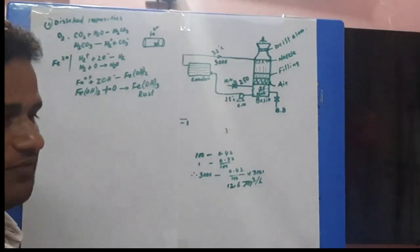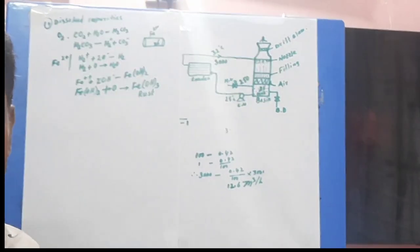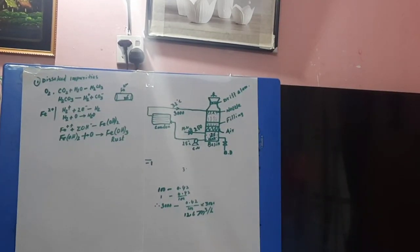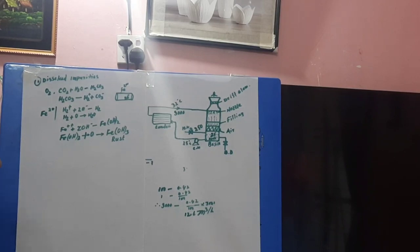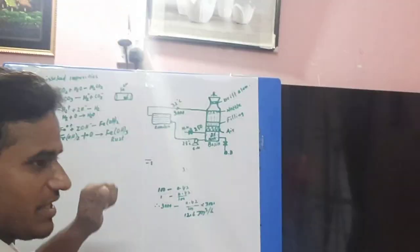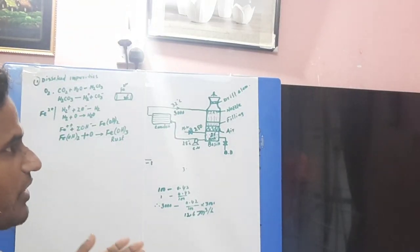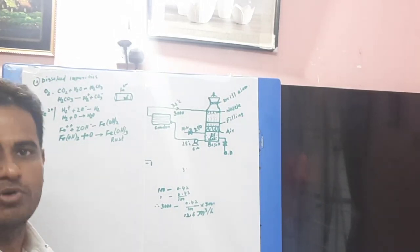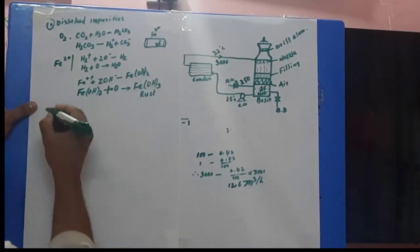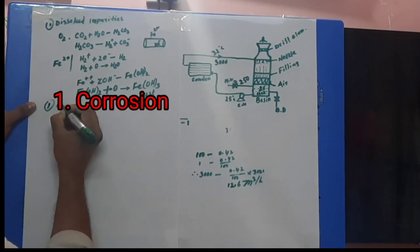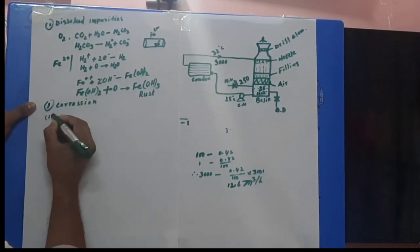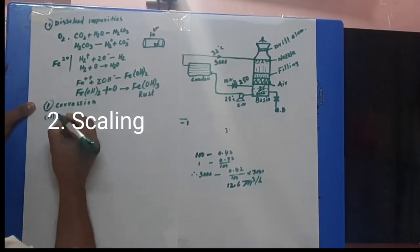If dissolved impurities are present in the water — such as calcium sulfate, magnesium sulfate, and magnesium carbonate (these are salts) — they will go to the condenser tube and deposit there, blocking the tube. So the first problem is corrosion, and the second problem is scaling.